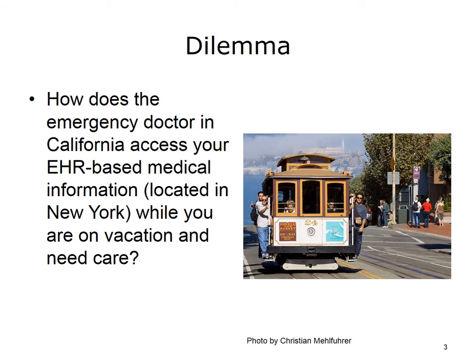The fundamental need underlying the justification for health information exchange is depicted in the following scenario. Imagine you are vacationing across the country — say you're from New York and you're in California in a rush to the hospital following an unfortunate car accident. The doctor who treats you in California would greatly benefit from knowing your underlying health conditions, prior diseases, chronic diseases, medication allergies, and what drugs you're currently on. Even if all of this information was securely stored in an electronic health record system in your primary care physician's office in New York, there still needs to be a mechanism by which the California-based physician can access this information to provide you the highest quality of care.